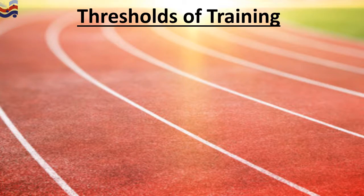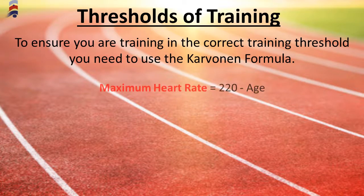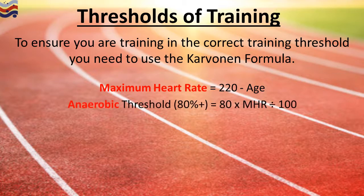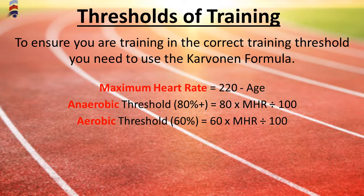The way to determine which threshold you are working in is by using the Karvonen formula. It starts by working out your maximum heart rate using the equation 220 minus your age. To find your anaerobic threshold: 80 × maximum heart rate ÷ 100. To find your aerobic threshold: 60 × maximum heart rate ÷ 100.